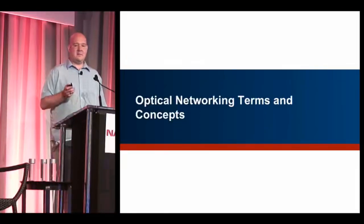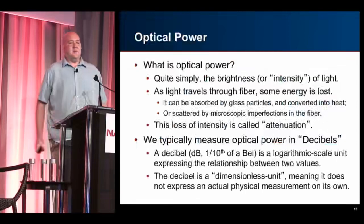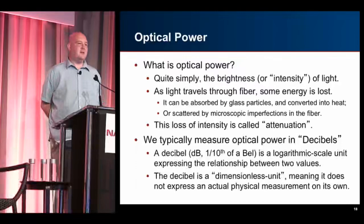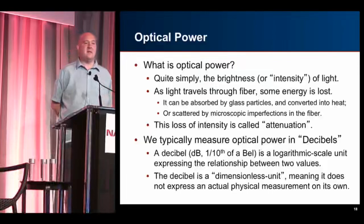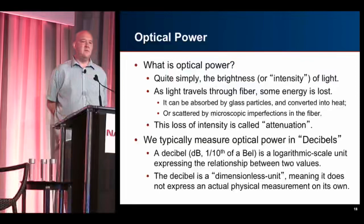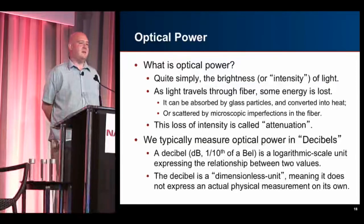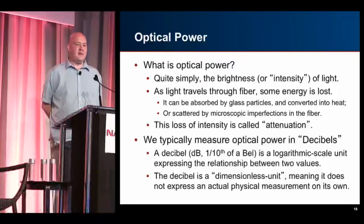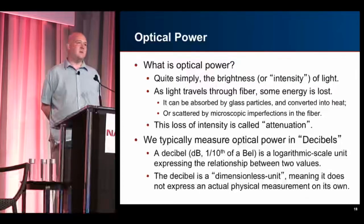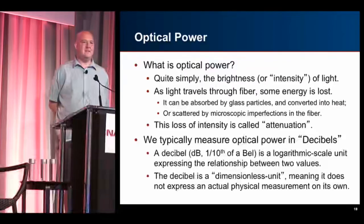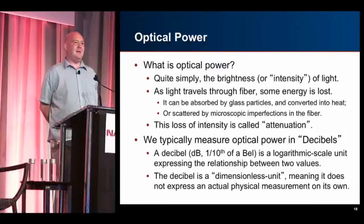Now let's talk about optical networking terms and concepts, starting with optical power. Optical power is really just the brightness or intensity of the light. As light travels through fiber it's going to lose some of its brightness — some gets absorbed by glass particles and converted into heat, some scattered by microscopic imperfections. That loss of intensity is called attenuation, measured in decibels — the same logarithmic scale used for sound. A decibel is one-tenth of a bel, expressing a relationship between two values. It's a dimensionless unit — by itself '10 decibels' doesn't mean anything inherently.